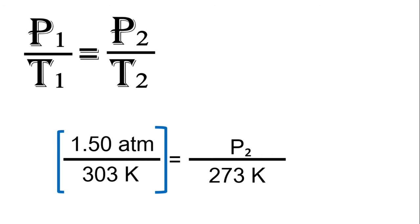Now, multiply both sides with the reciprocal of P2, and that is 273 Kelvin over 1.